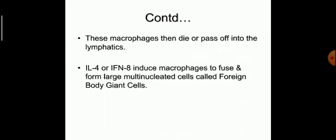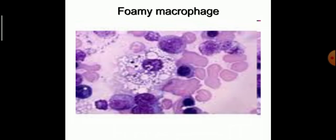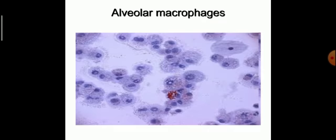Eventually, these macrophages die or pass off into the lymphatics. Interleukin-4 and interferon induce macrophages to fuse and form large multinucleated cells called foreign body giant cells. This is a microscopic picture of a foamy macrophage — you can see vacuoles in the cytoplasm, with abundant vacuolated cytoplasm. This is a picture of alveolar macrophages that can be found in sputum; these alveolar macrophages are mainly present in the lungs.